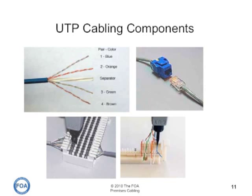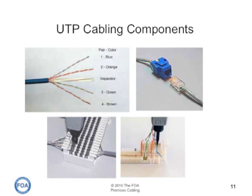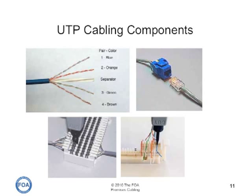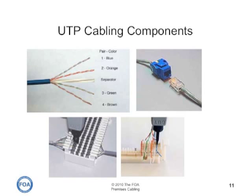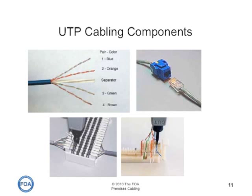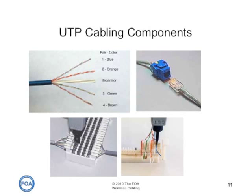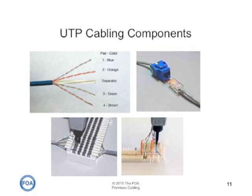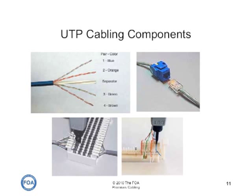Most people think of structured cabling, they think of unshielded twisted pair. It's a four-pair cable where each pair has a slightly different twist to reduce crosstalk, and uses a modular eight-pin connector assembly in a plug and jack configuration usually called an RJ45, although an RJ45 is actually a particular pin-out configuration of this modular eight-pin connector. If there are interconnections, they may be done on patch panels or on punch-down blocks, like the 66 block on the lower left or the 110 block on the lower right.